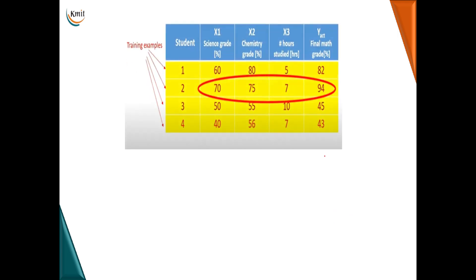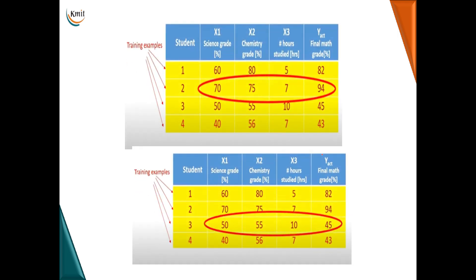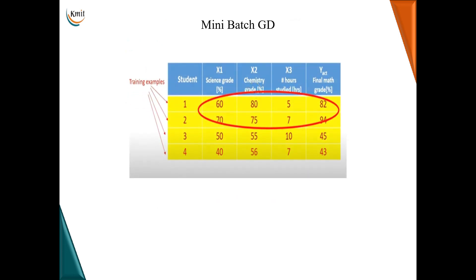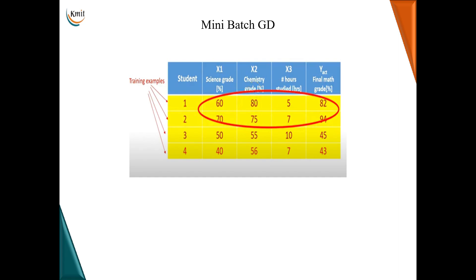In each iteration, stochastic gradient descent takes a different random training example. With four training examples, it takes four passes to complete one epoch. For mini-batch gradient descent, instead of one example at a time, we take batches — here batch size is two. The first two training examples are used for forward pass, backward pass, and weight update, then the next two training examples are used in the second pass.